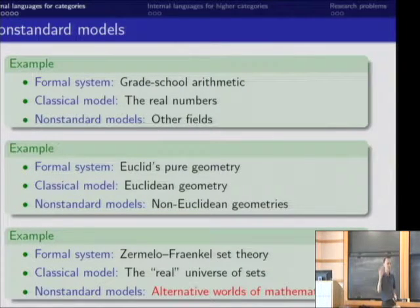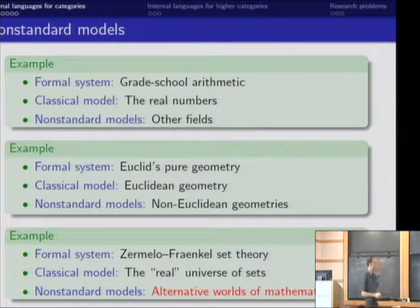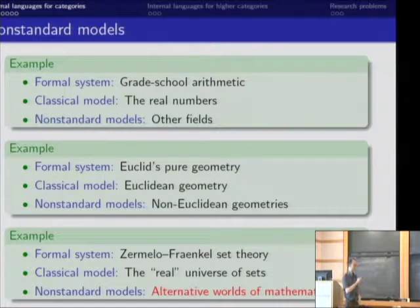But then eventually, people realized that there were alternative worlds that could be used to model set theory. Gödel and Cohen found forcing models and constructible models and so on. And so then eventually, people started to exploit these alternative worlds in which we can do all of mathematics, because a set theoretic foundational system can be used to build all of mathematics. And it turns out to also be really useful to do all of mathematics in other different contexts.